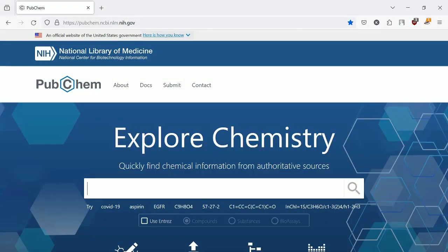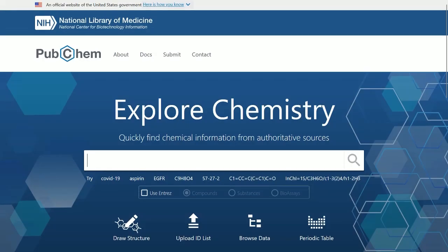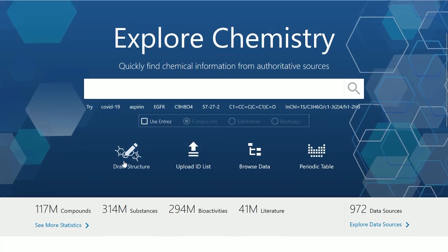Navigate to PubChem. Go to the PubChem website pubchem.ncbi.nlm.nih.gov. You can search by the drug name, chemical formula, or CAS number.